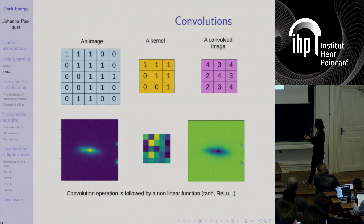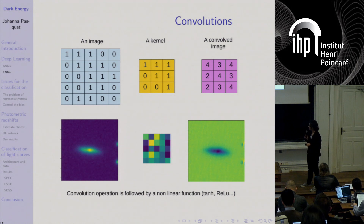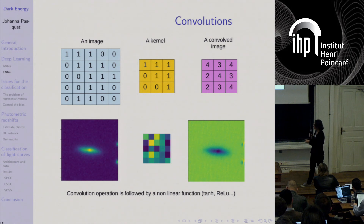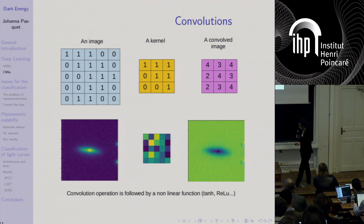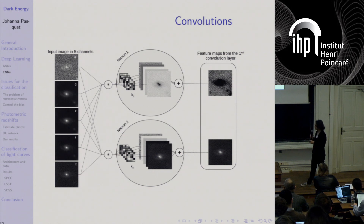For the convolution operation: here you have an image of a galaxy. The kernel of convolution — a real kernel I extracted from my network — converts the input image to give a convolved image. The kernel moves through the image with a certain stride, the scalar product is computed inside the sliding window, and at the end you have a feature map with a nonlinear function also applied. In a CNN you have a layer with several kernels.